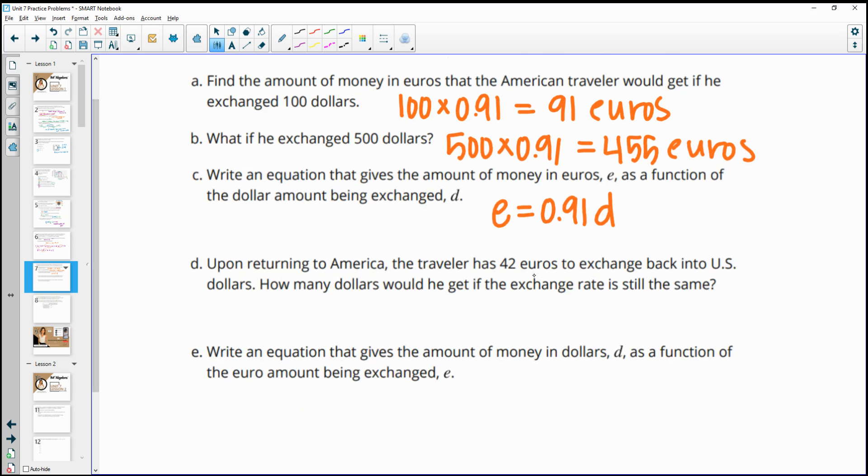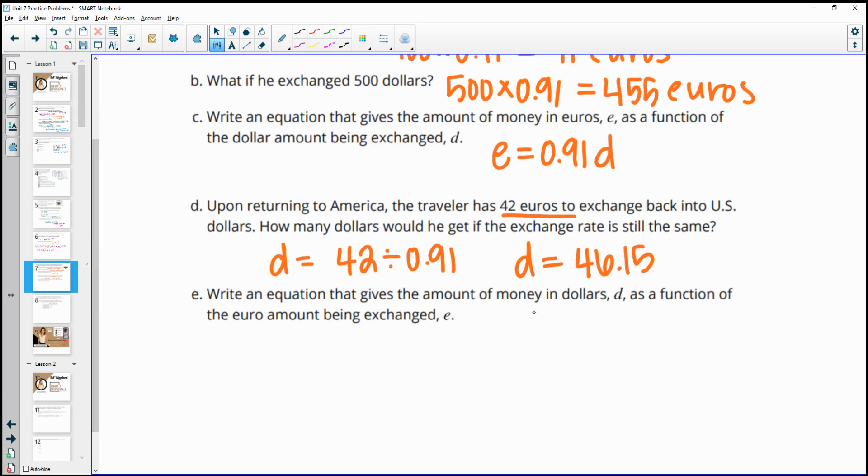Then it says upon returning to America, the traveler has 42 euros to exchange back to U.S. dollars. So how many dollars would he get if he exchanged, if the exchange rate was the same? So then we're just going to do the inverse of this. So the dollars that he would have would be the euros divided by 0.91 this time. And so the number of dollars that he would be getting back would be 46.15 or $46.15. And then it says write an equation that gives the amount of dollars as a function of the euro. So that's just using this. So the dollars would equal the euros divided by 0.91.